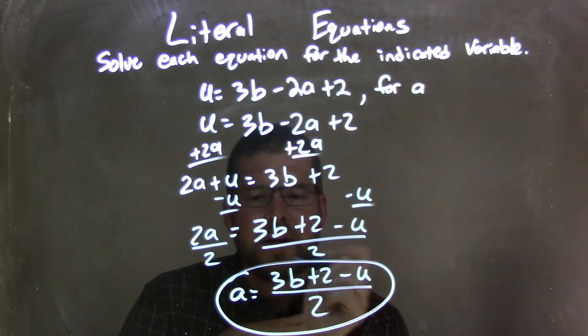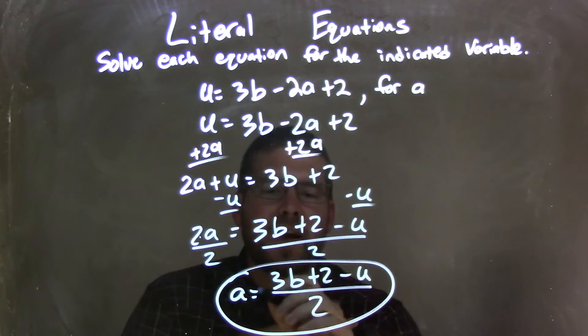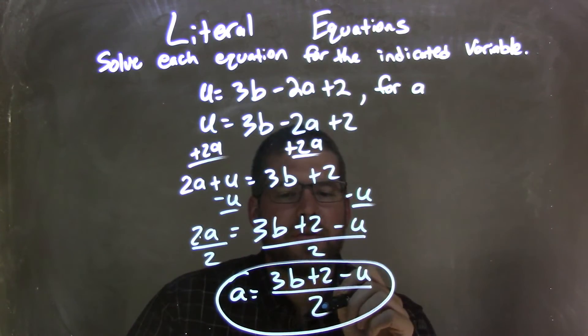I then divided both sides by 2 to get a by itself to counteract that multiplication there. And so I got a equals 3b plus 2 minus u over 2, and that is our final answer.